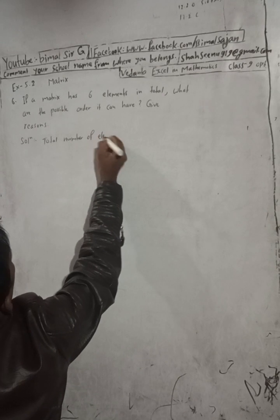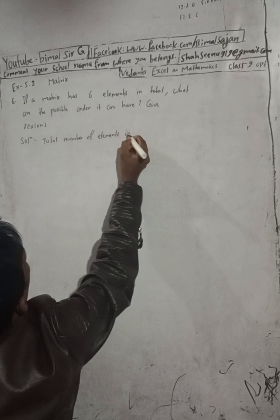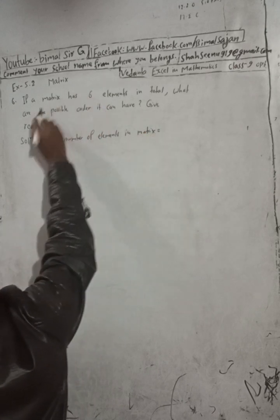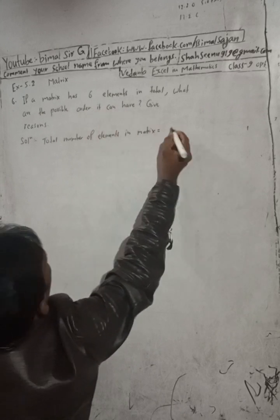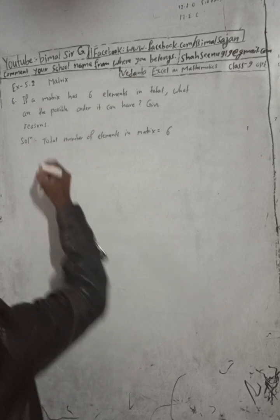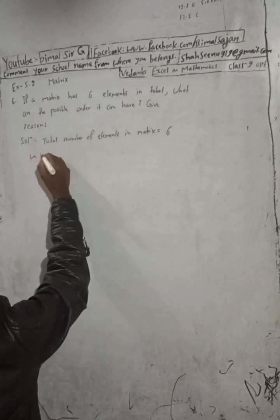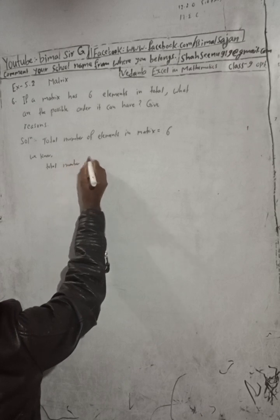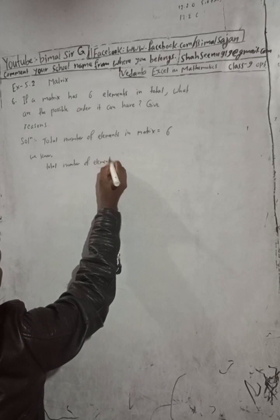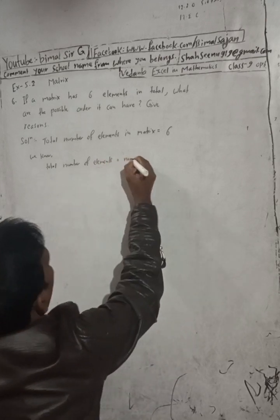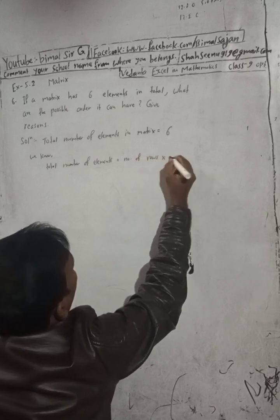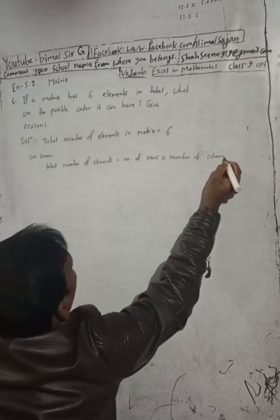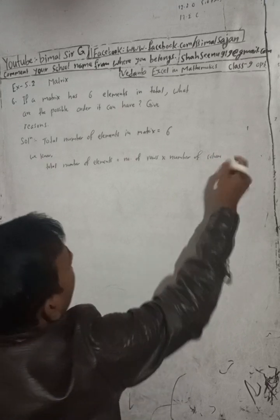We know that the total number of elements in the matrix is equal to the number of rows multiplied by the number of columns.